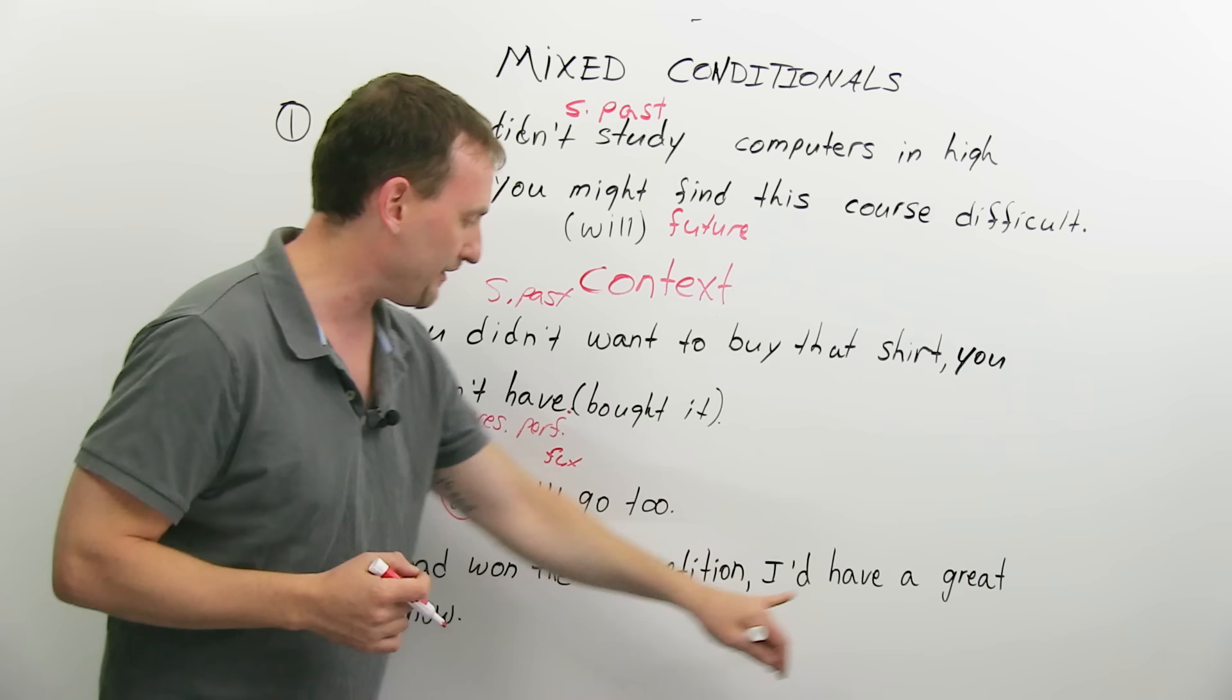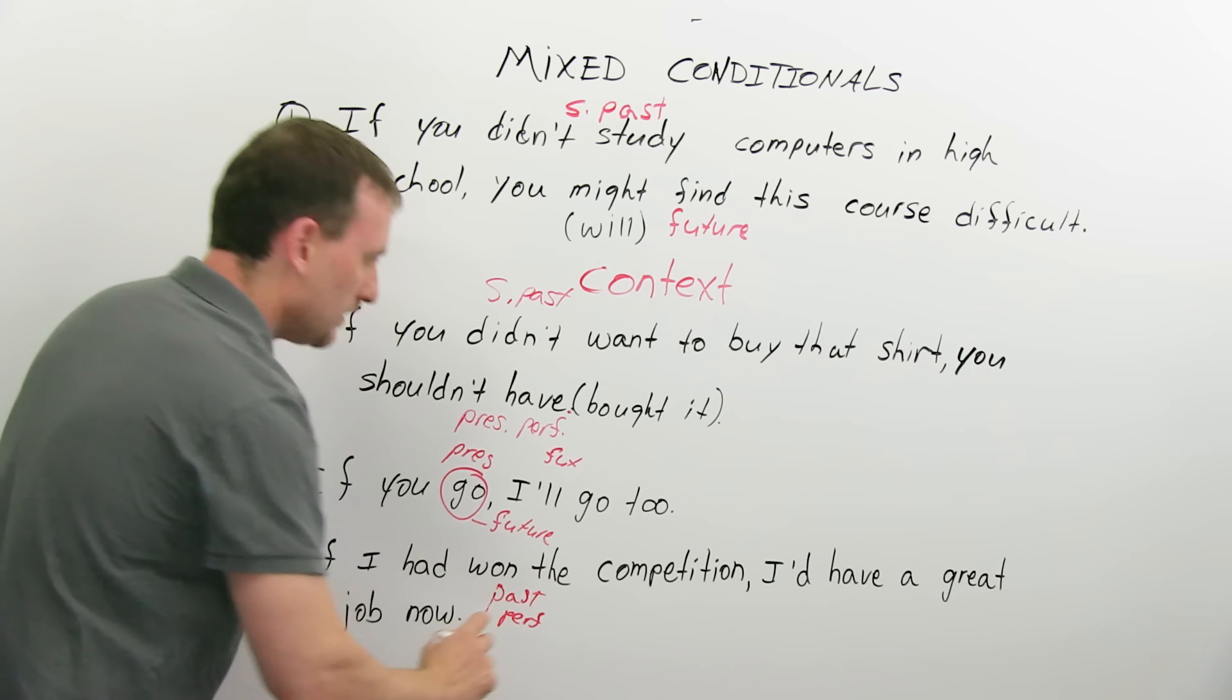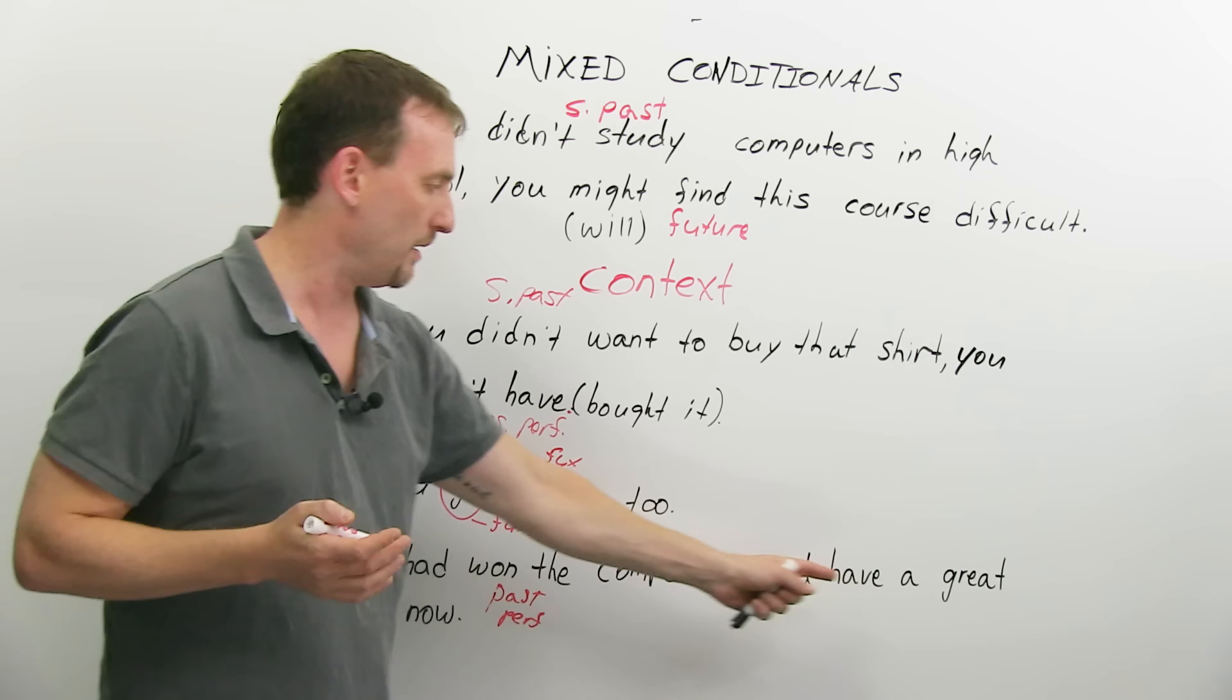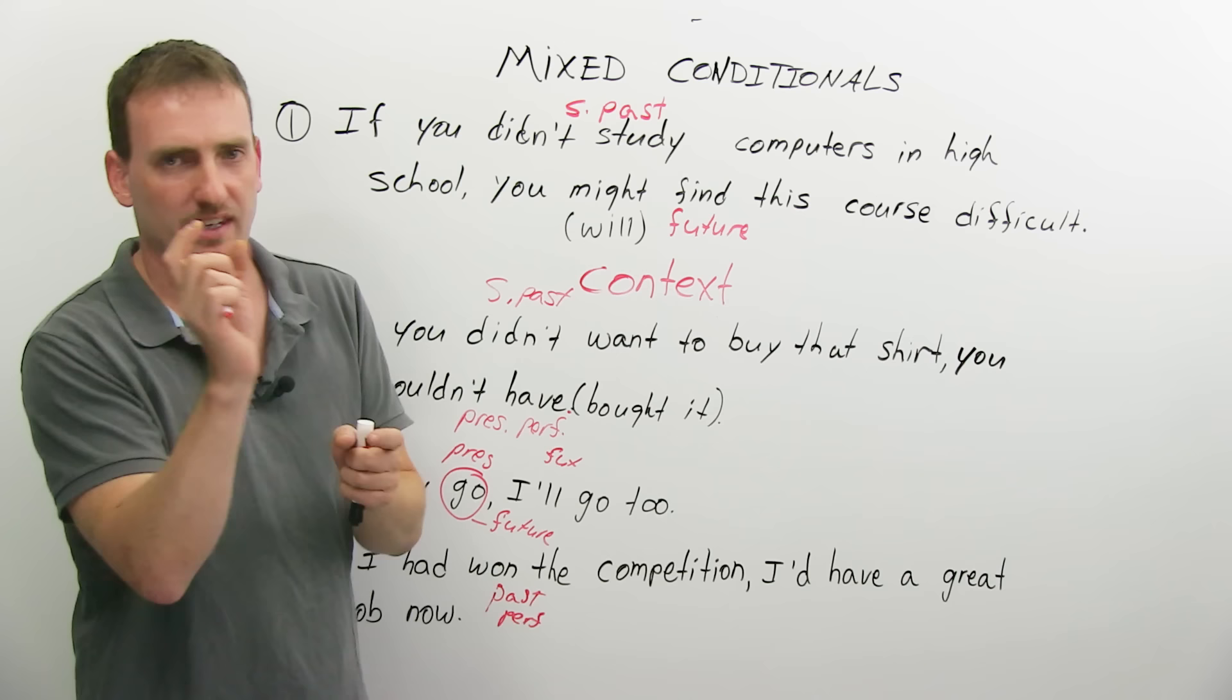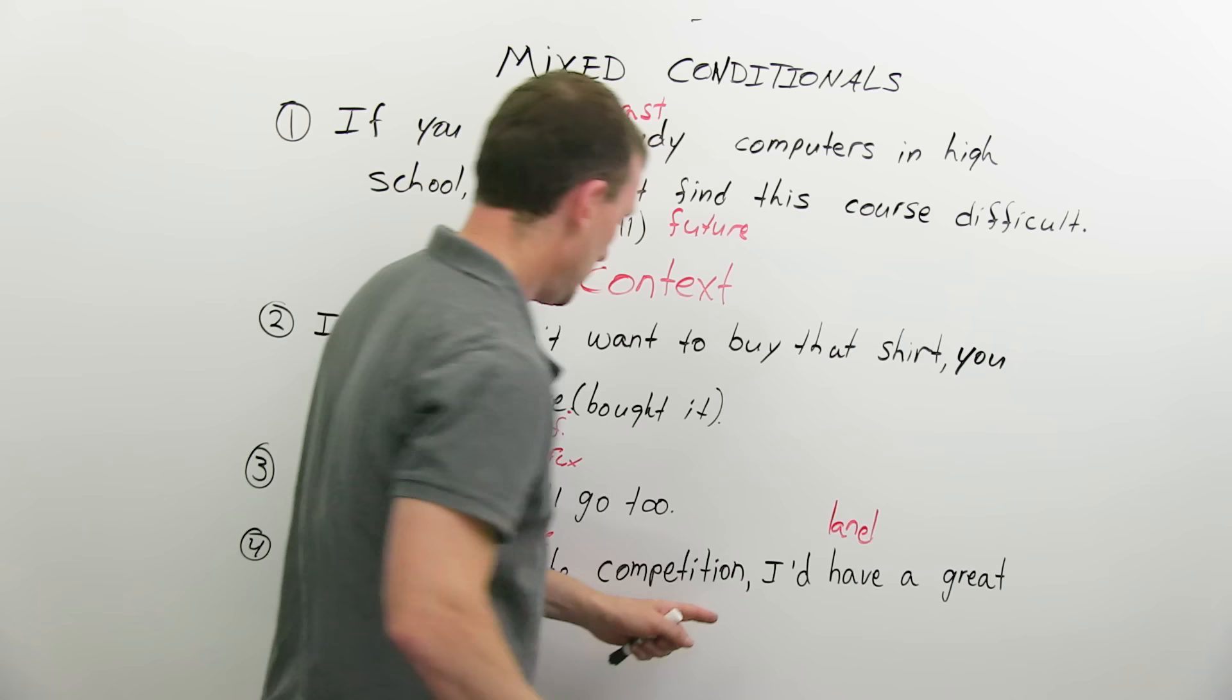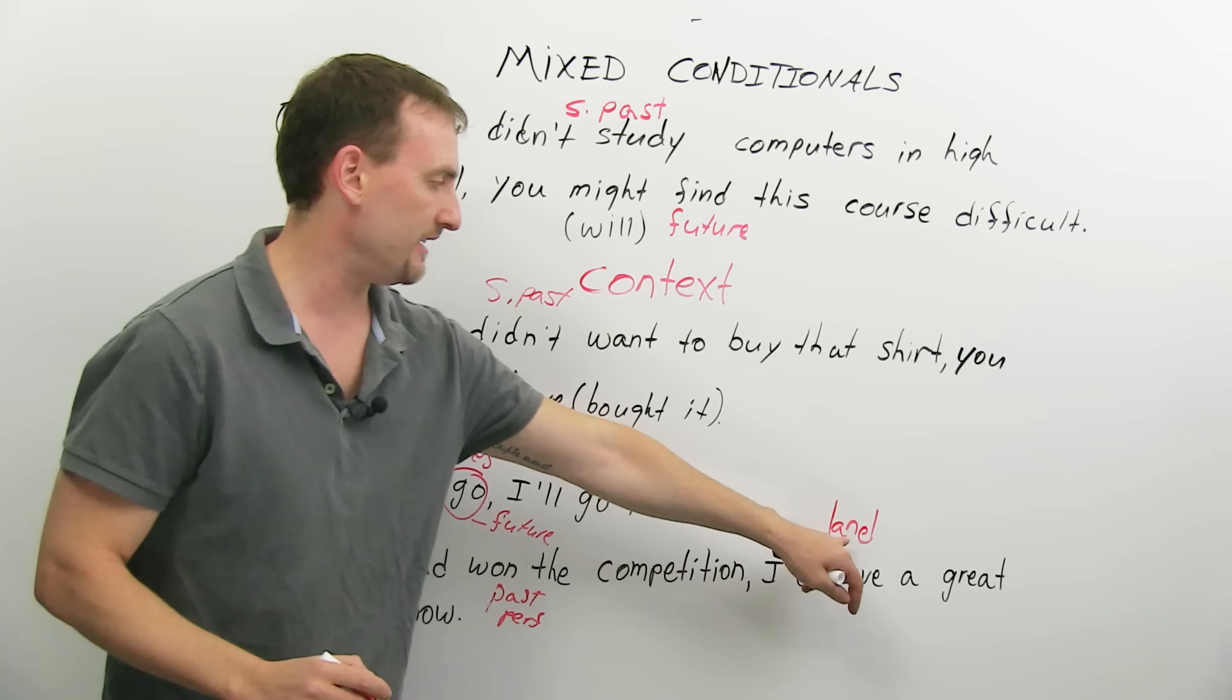Next. If I had won the competition, I'd have a great job now. So, here we have, again, the past perfect. And now it should be, I would have plus another verb, a past participle, a pp verb, right? But here I have only would have. I would have. This is the main verb. This is not the would have done, not the have of the whole mix. This is its own verb. If you want, I'll give you another one. I'd land a great job now. Land means get. It's another way to say when you get a job, you land a good job.